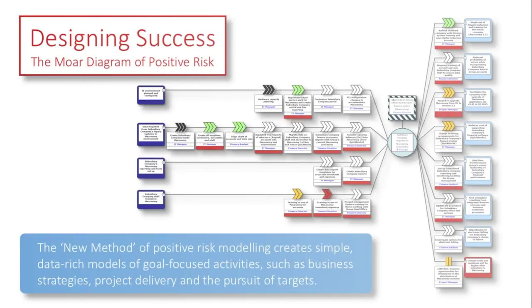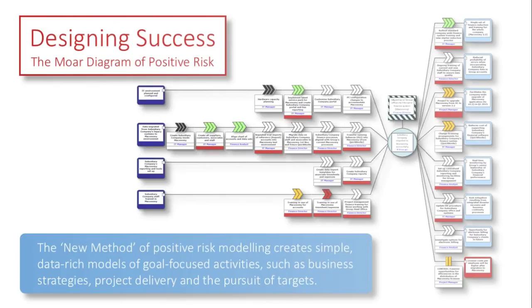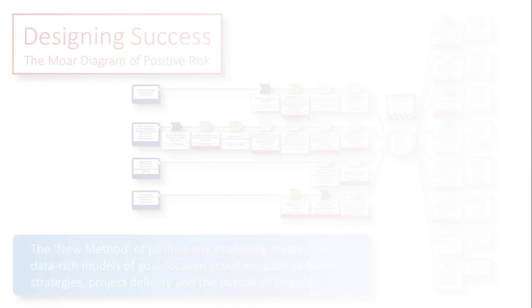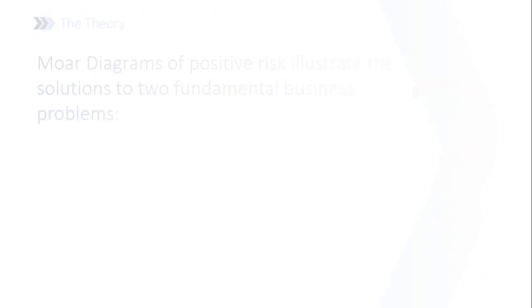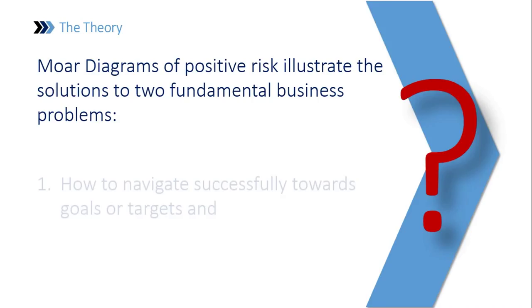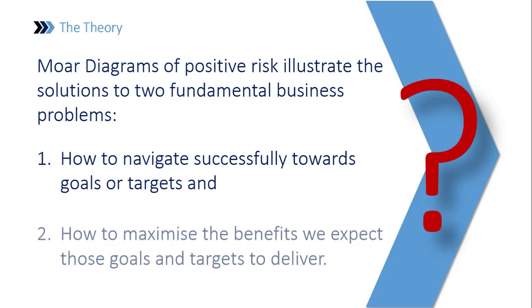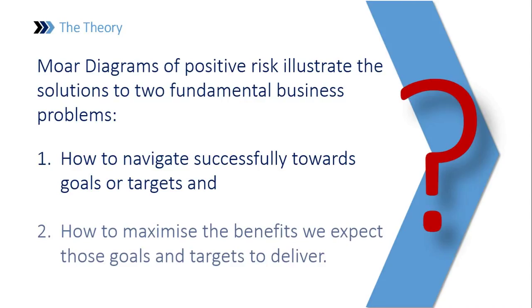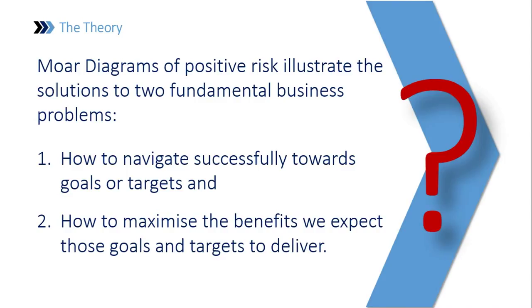As the statement at the bottom of that slide says, this method will enable us to create quite simple models or diagrams of goal-focused activities — the things that we want to do: business strategy, project delivery, or the pursuit of targets. Diagrams of positive risk will help us to navigate successfully towards goals or targets and also to maximise the benefits we expect those goals and targets to deliver.